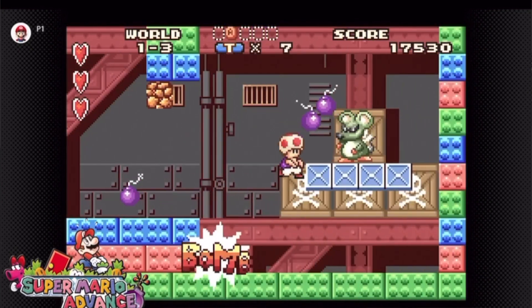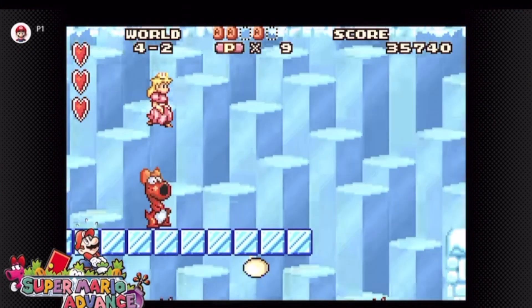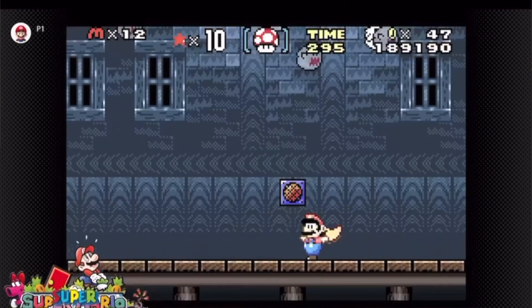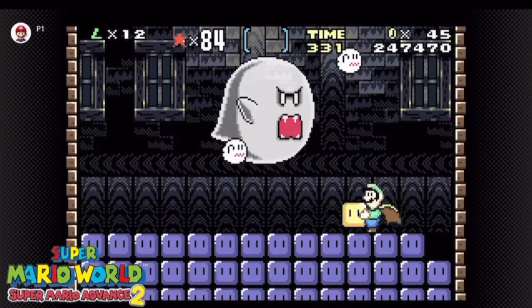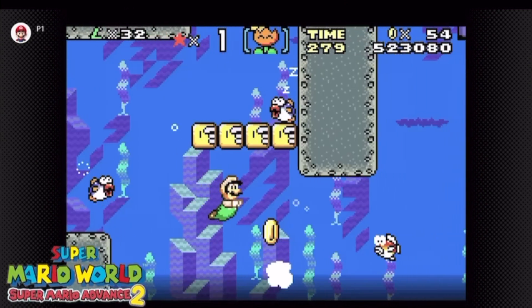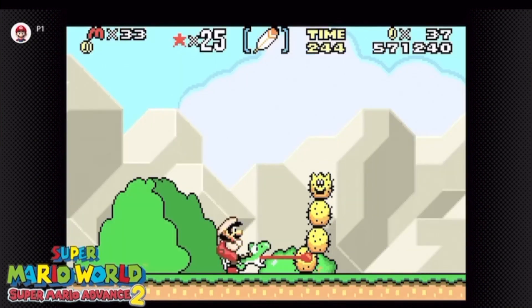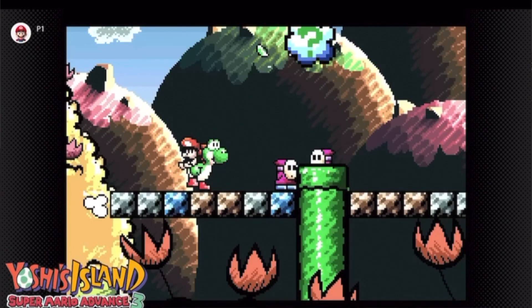Basically, Super Mario World, also known as Super Mario Advance 2, Yoshi's Island, also known as Super Mario Advance 3. We have three Mario Adventures that are on the way to Nintendo Switch Online Expansion Pack.